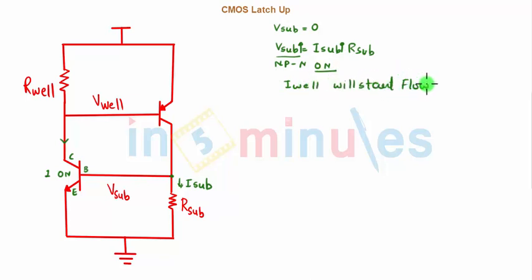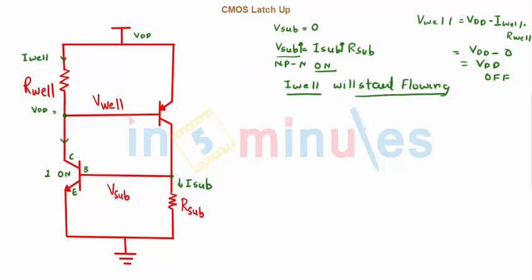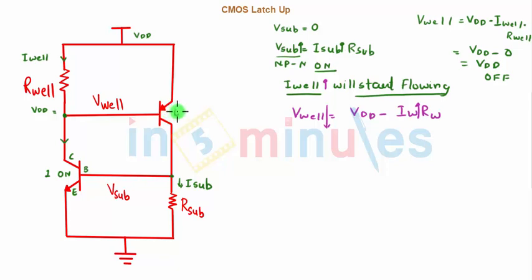Initially, V_well was nothing but VDD minus I_well × R_well. Since I_well was initially zero, V_well was equal to VDD, which meant a higher voltage was applied at the base of the PNP transistor, keeping it off. However, now that I_well has started flowing and increasing, V_well keeps reducing. At one point, the voltage at the base of the PNP will drop to a sufficiently low value to turn on the PNP transistor.